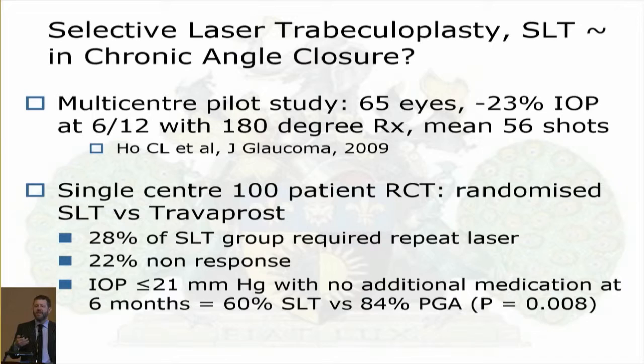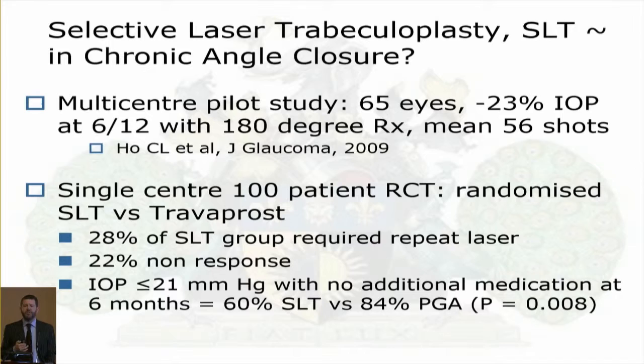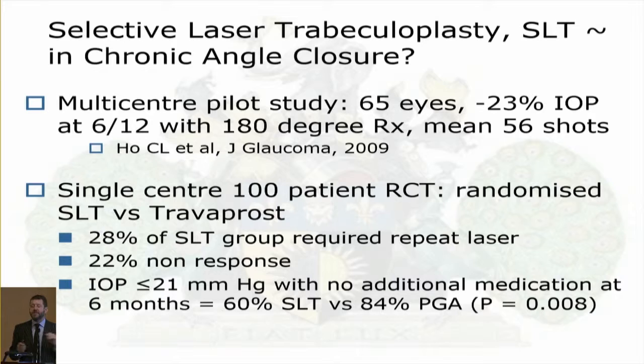To summarize so far: clear lens extraction versus iridotomy, iridoplasty in managing angle closure and acute angle closure. Now a complete change: selective laser trabeculoplasty for chronic angle closure. For years, people said don't do laser trabeculoplasty in angle closure — for argon laser trabeculoplasty, that is true because it causes peripheral anterior synechiae and too much focal localized inflammation. But for selective laser trabeculoplasty, which is less inflammatory, there does seem to be a role.